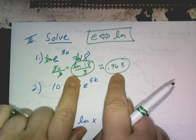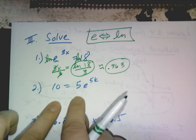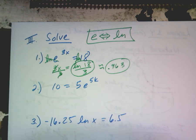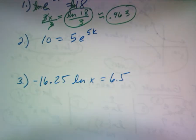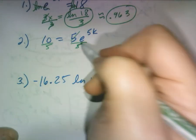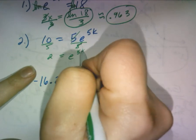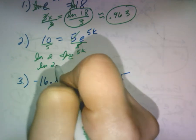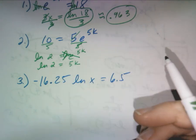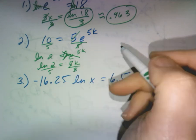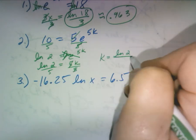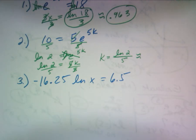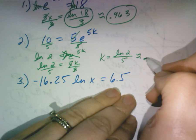For the second problem, you first need to get e by itself — don't do anything with ln's until e is isolated. Divide both sides by 5, giving 2 equals e to the 5k. Now ln both sides: ln(2) equals 5k, since ln and e cancel. Divide by 5: k equals ln(2) over 5, which is approximately 0.139.